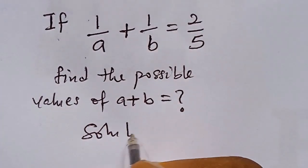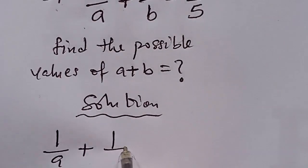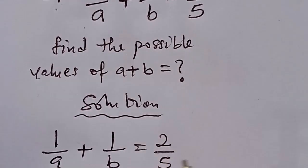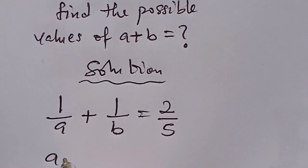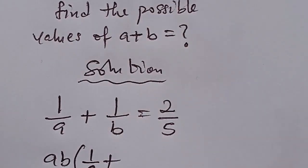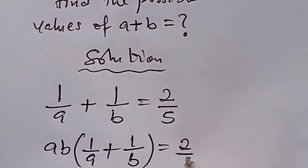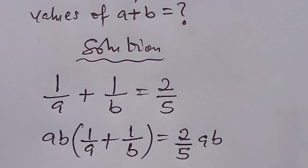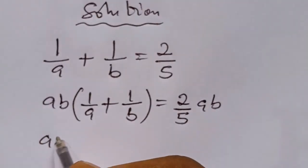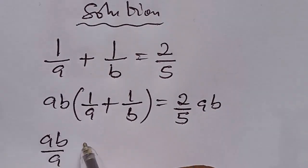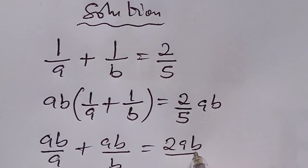Solution. We have 1 over a plus 1 over b equal to 2 over 5. What we need to do first is to multiply both sides by ab. So we have ab into bracket 1 over a plus 1 over b close the bracket, equal to 2 over 5 multiplied by ab.